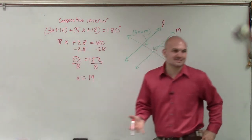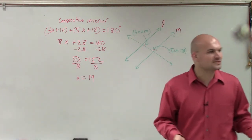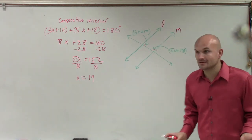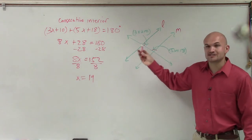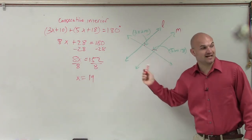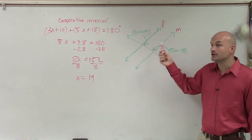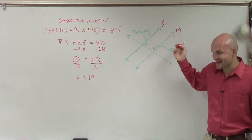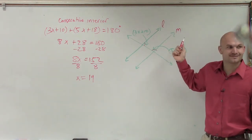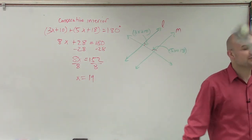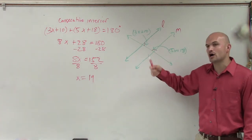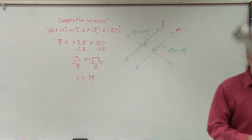So therefore, what this states, ladies and gentlemen, the whole purpose of doing this problem is when x equals 19, these two angles are supplementary. And when consecutive interior angles are supplementary, you now have parallel lines. OK? So you can prove you have parallel lines by proving that your consecutive interior angles add up to 180. OK?